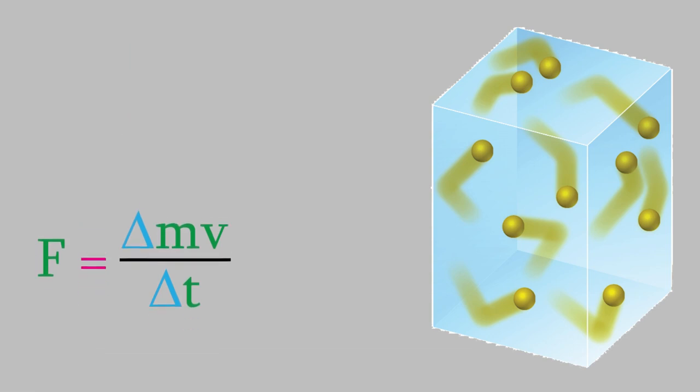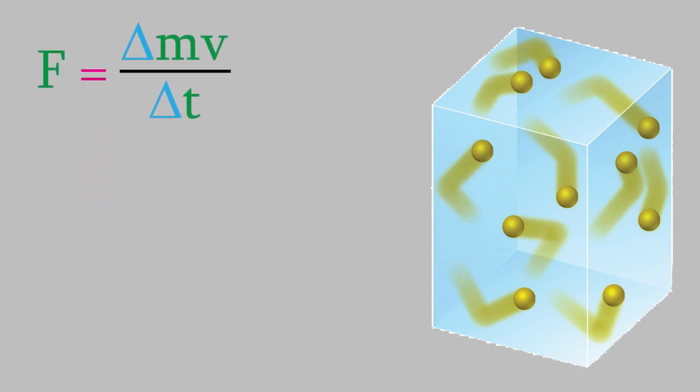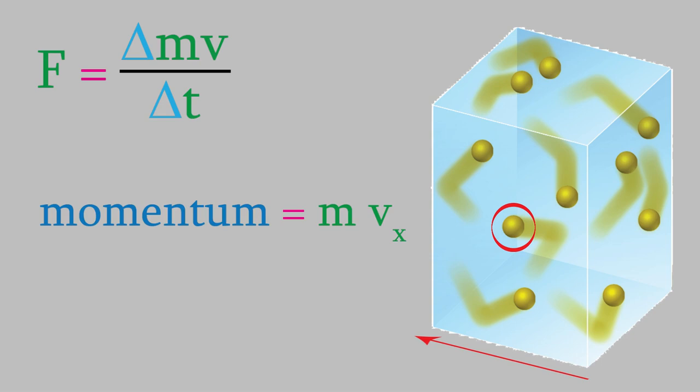Let's think more deeply about this equation. Suppose we focus on just one molecule in the gas, and let's only worry about its motion in the x direction. The particle is probably moving in the x, y, and z directions, but for now we'll just focus on how much it's moving in the x direction. We'll call its velocity in the x direction vx. The formula for momentum is mass times velocity, so mvx is the momentum in the x direction, and our particle travels across the box with this momentum.